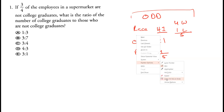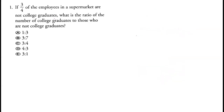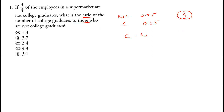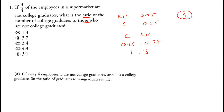Now the first question: if three-fourths of employees in a supermarket are not college students, then not-college-students equals 0.75, and college graduates would be 0.25 because the total must be one. What is the ratio of college students to those who are not college students? That is 0.25 to 0.75, which simplifies to 1 by 3. So this is the right option.